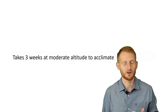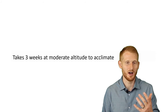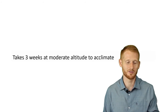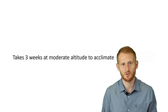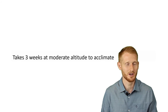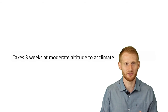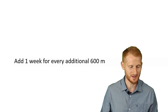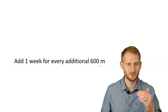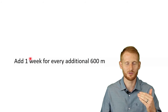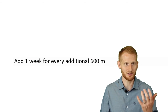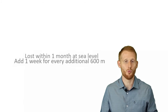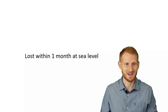If you're at altitude long enough, you acclimate, and your exercise performance slowly improves compared to when you first arrived, getting closer to your sea-level capabilities. Acclimatization to moderate altitude — such as Denver, Colorado, or Mexico City — takes about three weeks. For every 600-meter increase in altitude above that moderate level, you need an additional week to acclimate — so three weeks for moderate, four weeks for 600 meters higher, five weeks for another 600 meters, and so on.